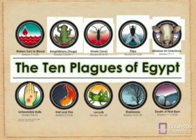Locusts — Locusts cover Egypt and eat everything. The result: Everyone advises Pharaoh to let the Hebrews go, but he refuses. Exodus 10:1-20. Plague 9.